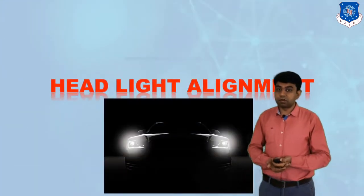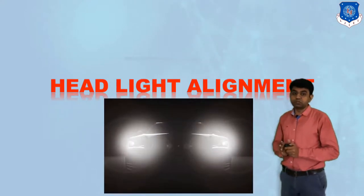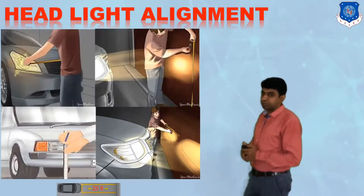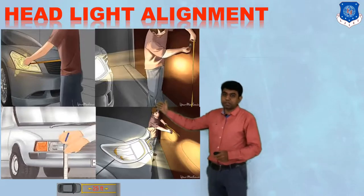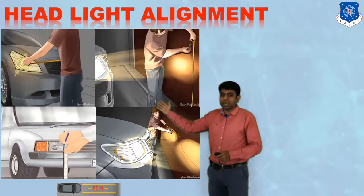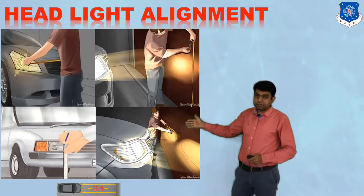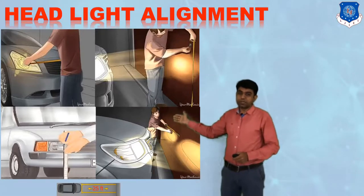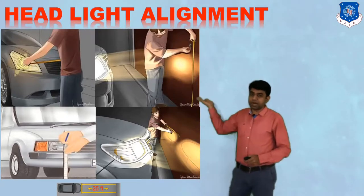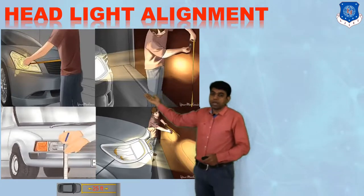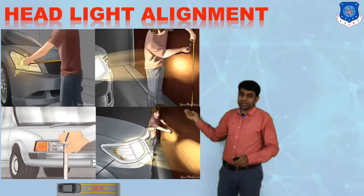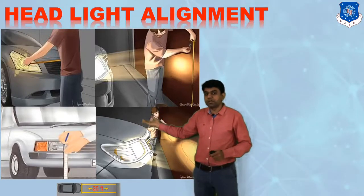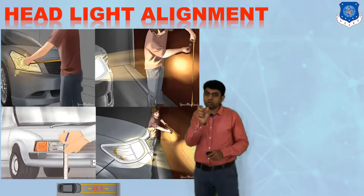Now let us discuss the headlight alignment test, which is used to measure the proper alignment of the light. To do this, we switch on the light of the vehicle and focus it on a straight wall in a dark room. We need to note the data of at what particular height the shadow of the lamp is focused. There are two different nodes by which we can make corrections in the position of the lamp by opening the bonnet.